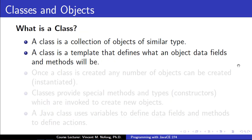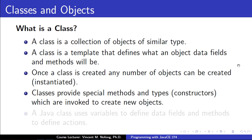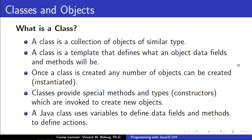A class is a collection of objects of similar type. You can view it more like a template that is used to define what an object's data fields are and what the methods would be. Once we have created a class, any number of objects can be created or instantiated from that class. Classes often provide special methods referred to as constructors, which are what we use to create new objects. A Java class file uses variables to define data fields as the state of the object and methods to define the actions or behavior of that object.